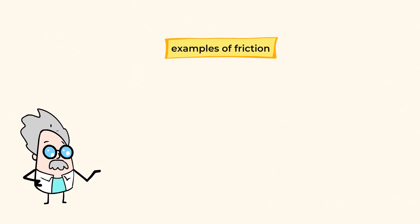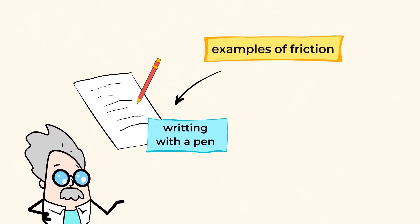You can see examples of friction all around you. When you write with a pen, the frictional forces between the pen and the paper cause some of the ink particles to stick to the surface of the paper.